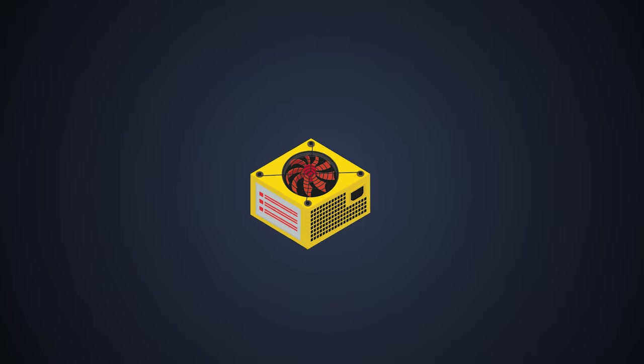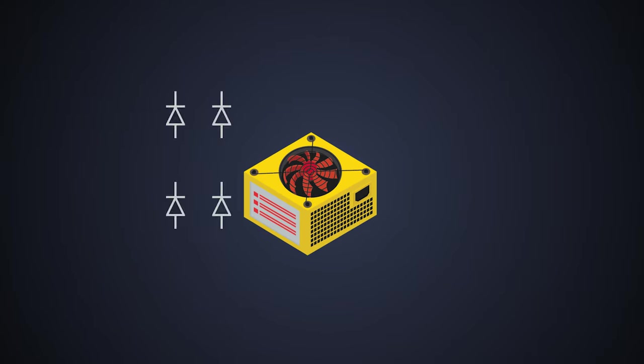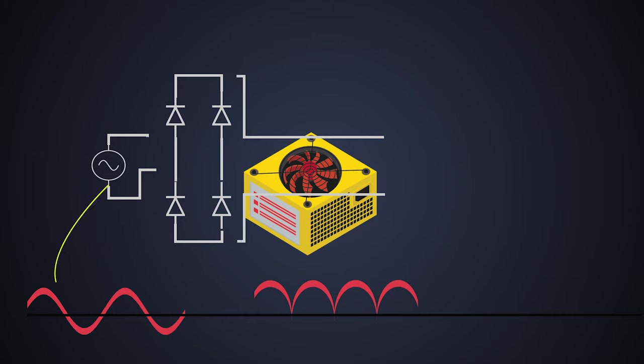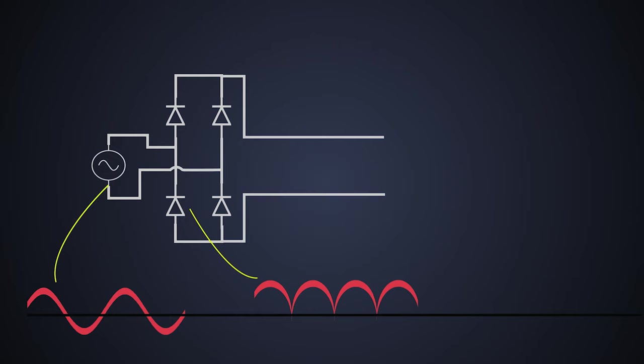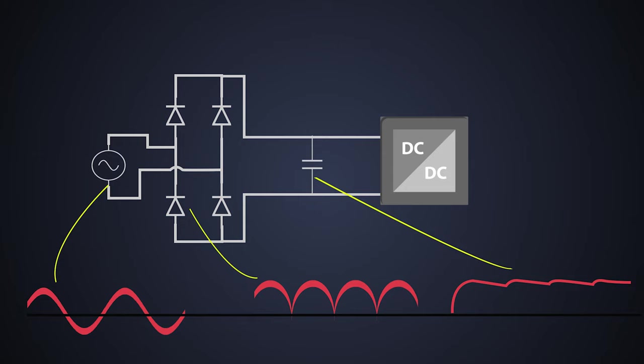If you see the circuit diagram of a power supply, there is a bridge rectifier at the input which rectifies the AC input voltage. Then this rectified voltage is provided to the DC link capacitor which filters the AC component present in the voltage and provides the DC voltage to the regulator or a DC to DC converter.